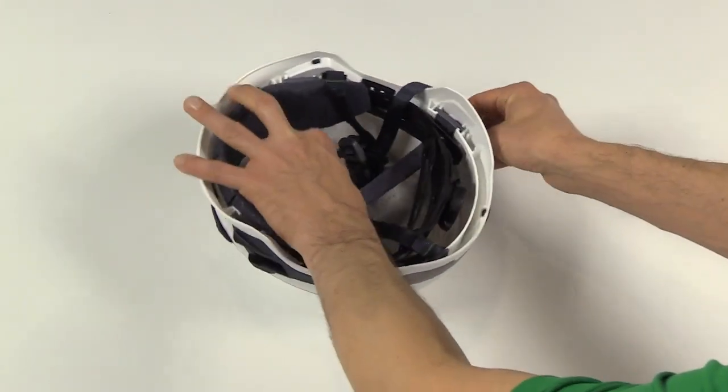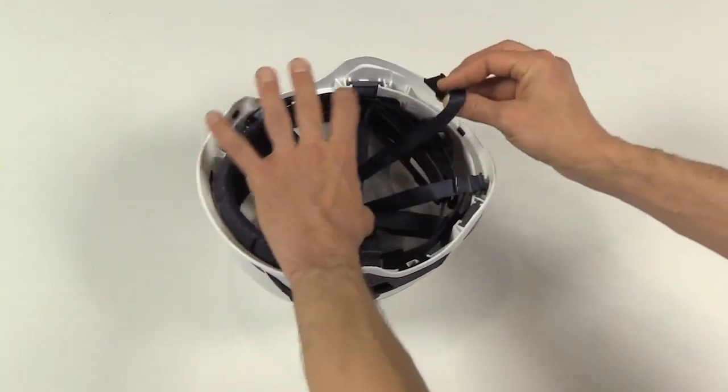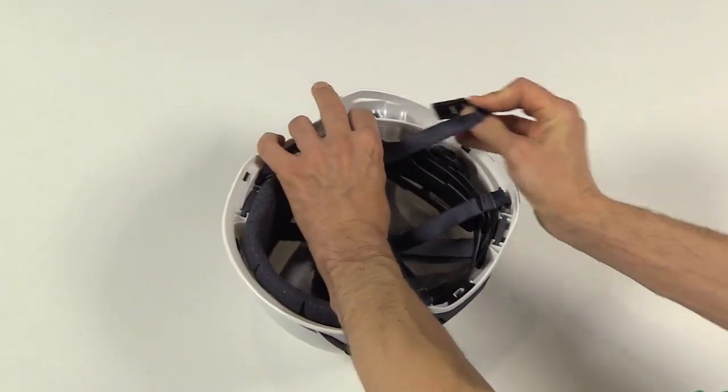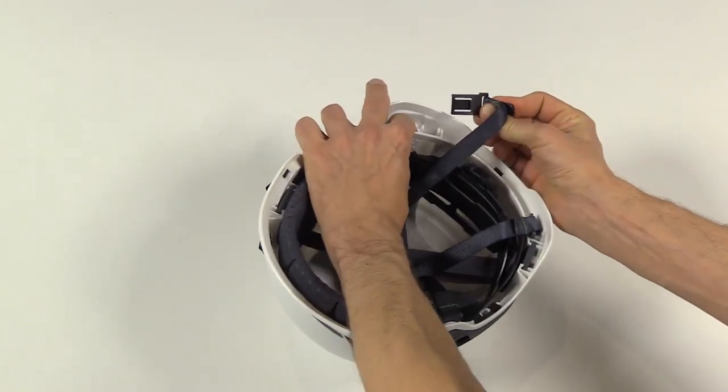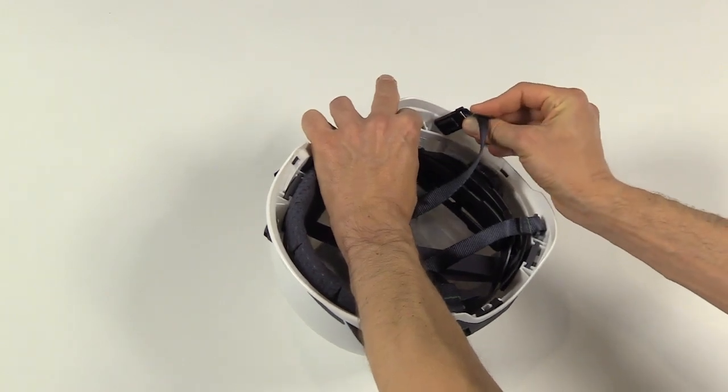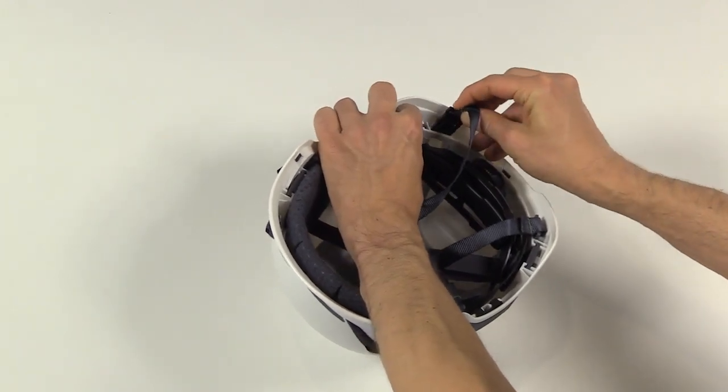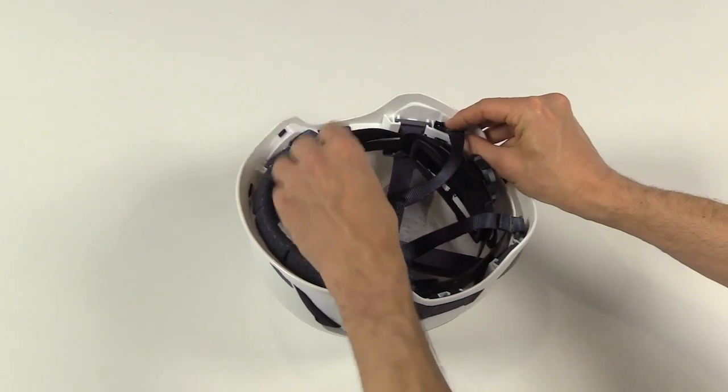Finally, attach the right rear clip. Make sure that the front of the clip faces the interior of the helmet and clip it in.